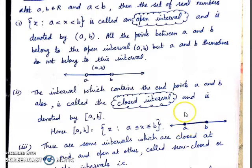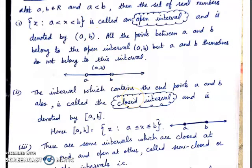To summarize simply: when endpoints are not included, the interval is open. When endpoints are included, the interval is closed.